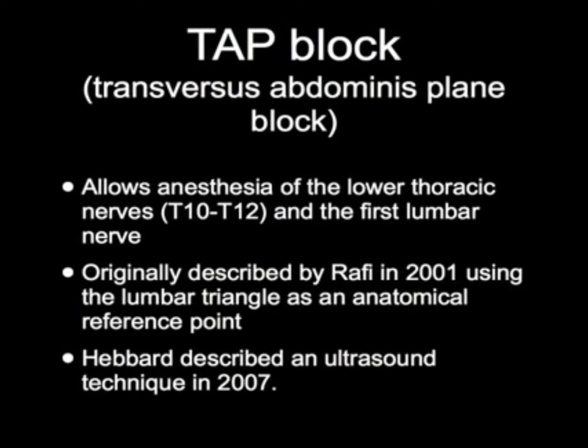The TAP block allows anesthesia of the lower thoracic nerves, T10 through T12, and the first lumbar nerve. Originally described in 2001, and in 2007, an ultrasound technique was first described.